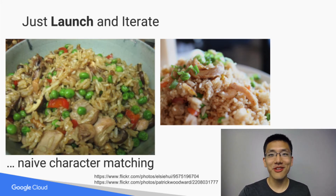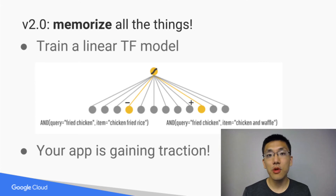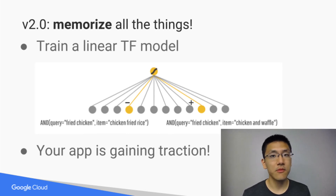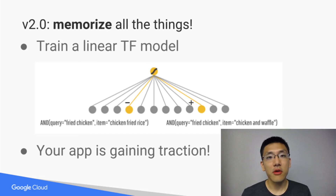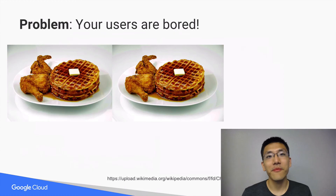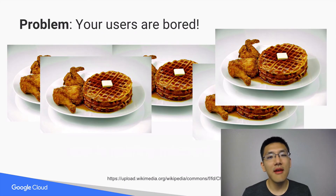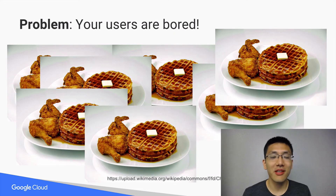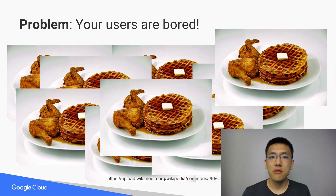You say, aha, I know machine learning. Let me use a linear model and memorize my users' preferences. So you build a linear or wide model, and now your users get chicken waffles when they ask for fried chicken. You deploy your V2 release with your wide linear model, and your app begins to gain traction. But now your users are bored — they don't want to be getting chicken and waffles every single time they ask for fried chicken. They want some variety.